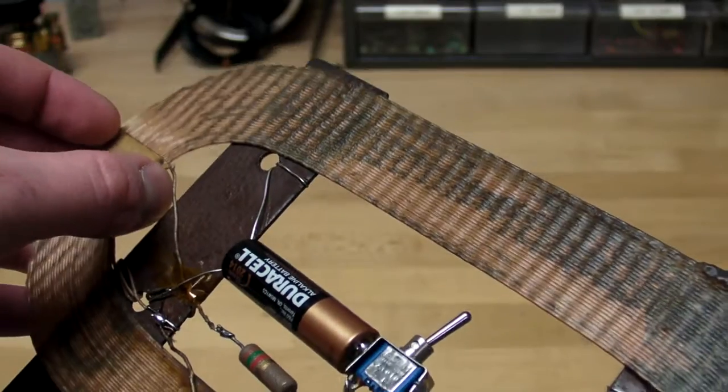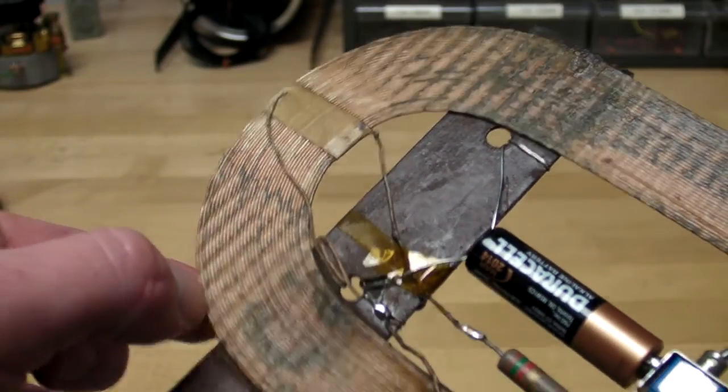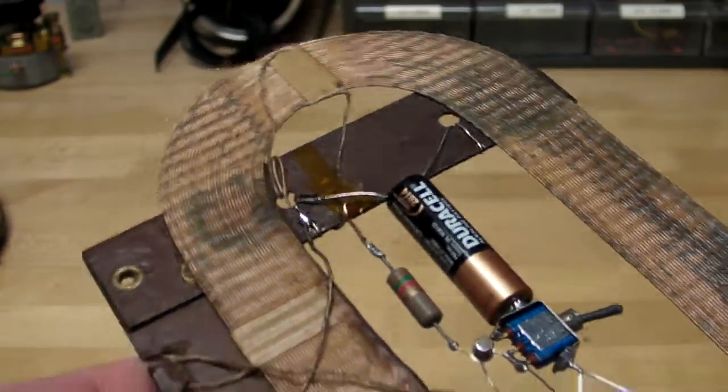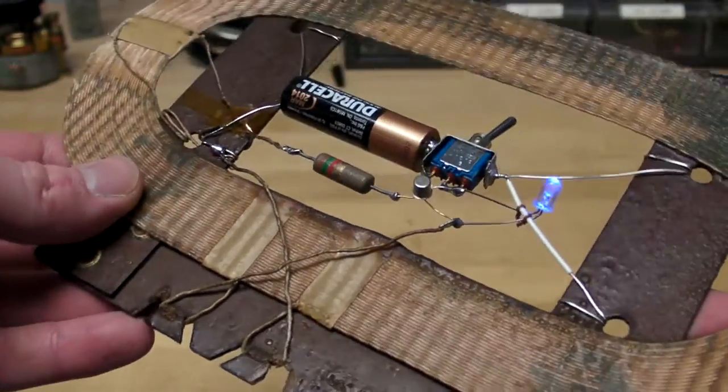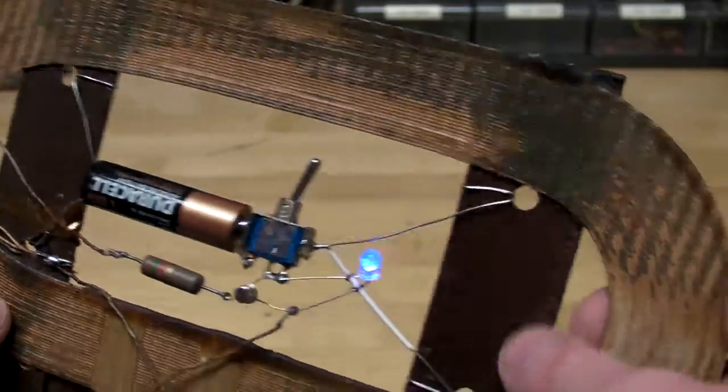And then the smaller coil on the outside, only the two outermost turns, that's the other coil and that goes to the collector and the LED side of the transformer.